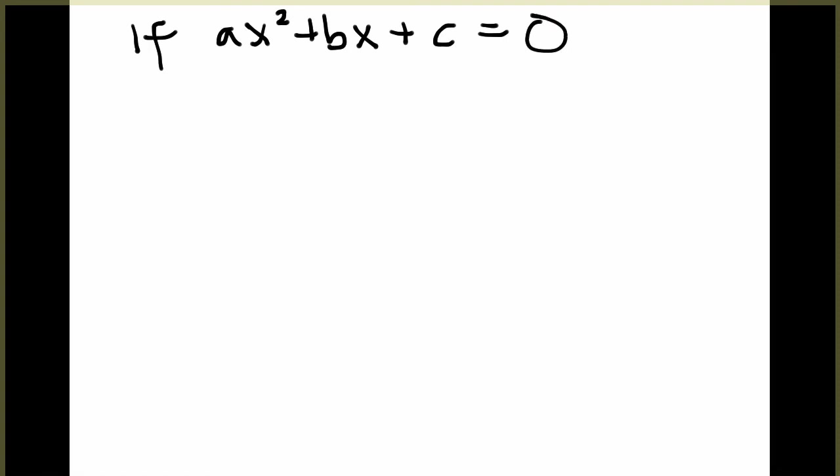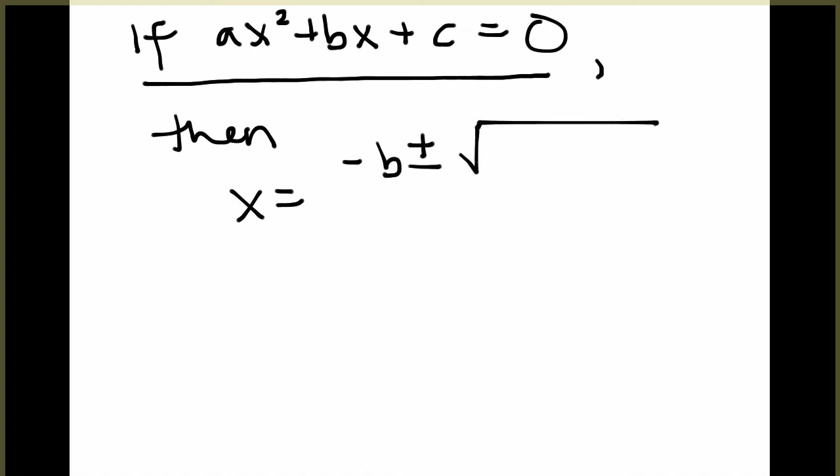So the key is you need to remember this first part. If ax squared plus bx plus c equals 0, then x equals negative b plus or minus the square root of b squared minus 4ac all over 2a.